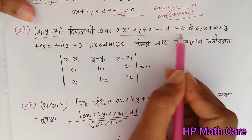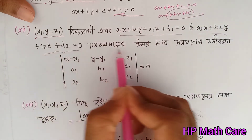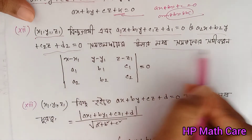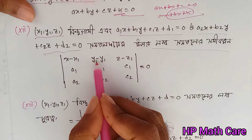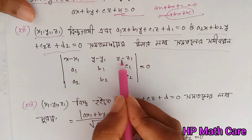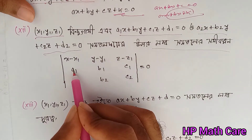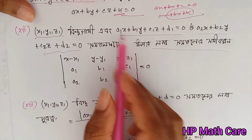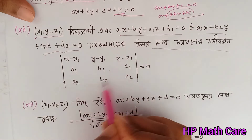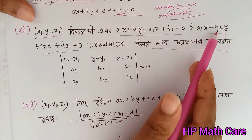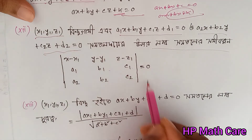A, x1 is equal to a, x1; y minus y1; z1. Then a1, b1, c1; then a1, b1, c1; then a2, b2, c2; a2, b2, c2 equal 0.